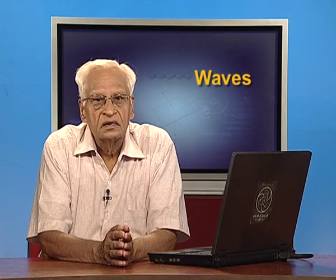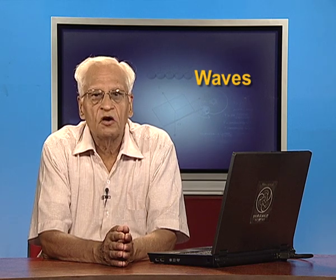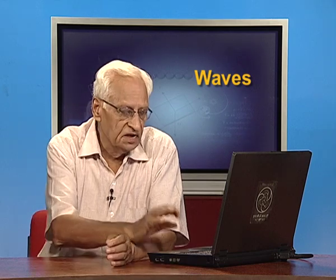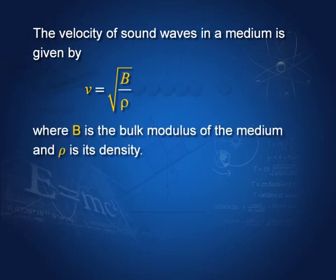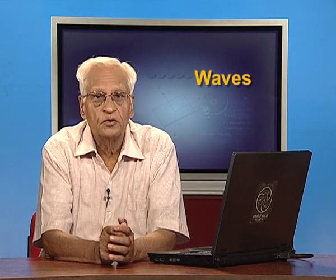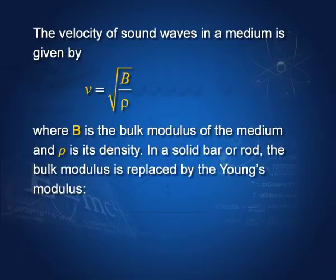Sound waves are longitudinal waves, and the velocity of such waves in a medium is given by V equal to square root of B by rho, where B is the bulk modulus of the medium and rho is the density. In a solid bar or rod, B is replaced by the Young's modulus, giving velocity equal to the square root of Young's modulus by the density.